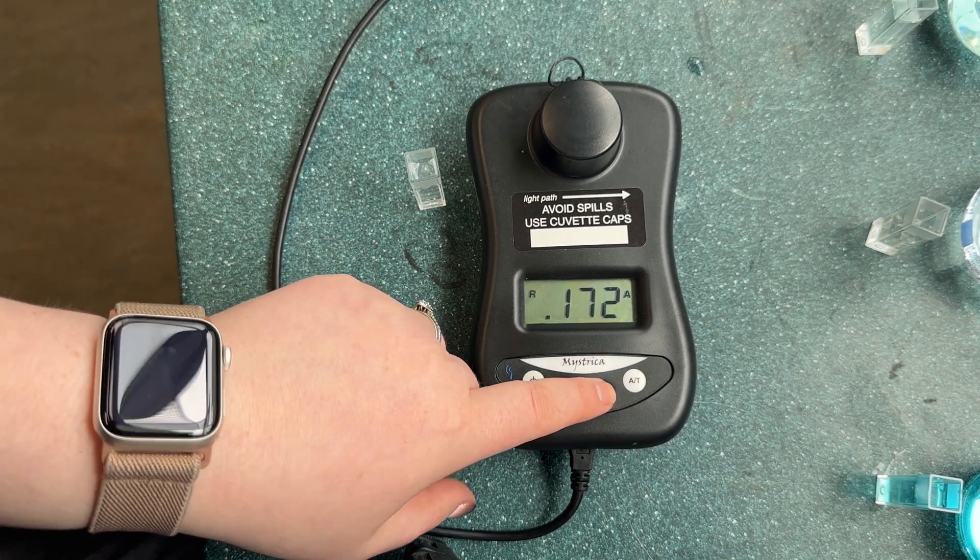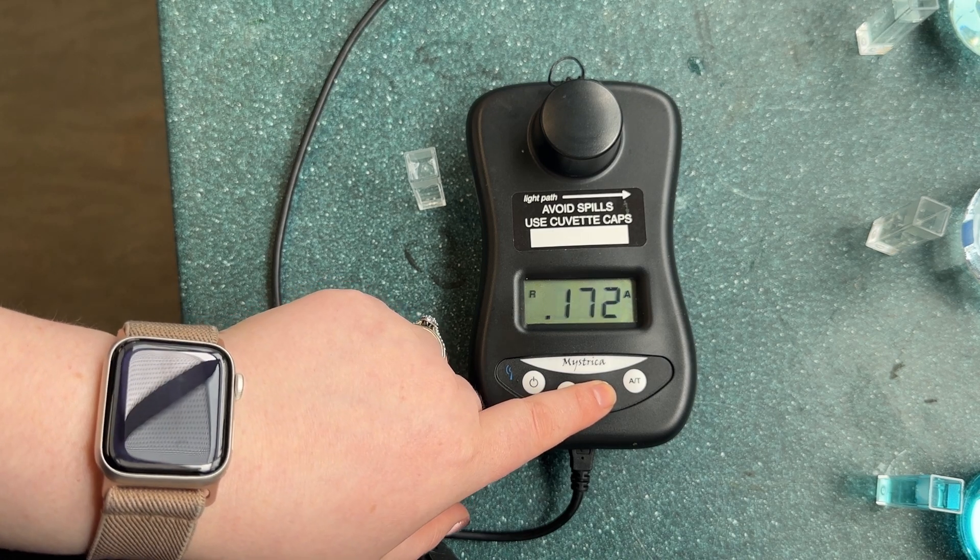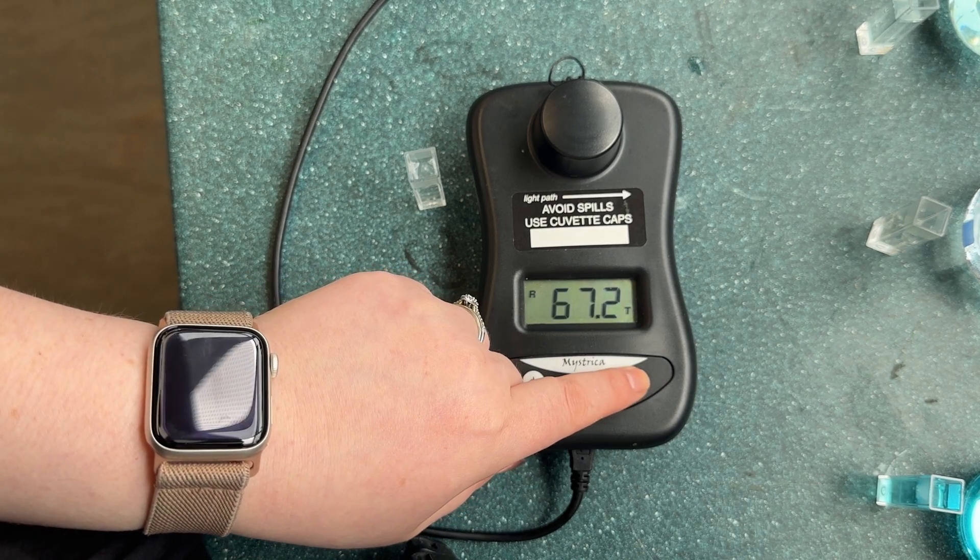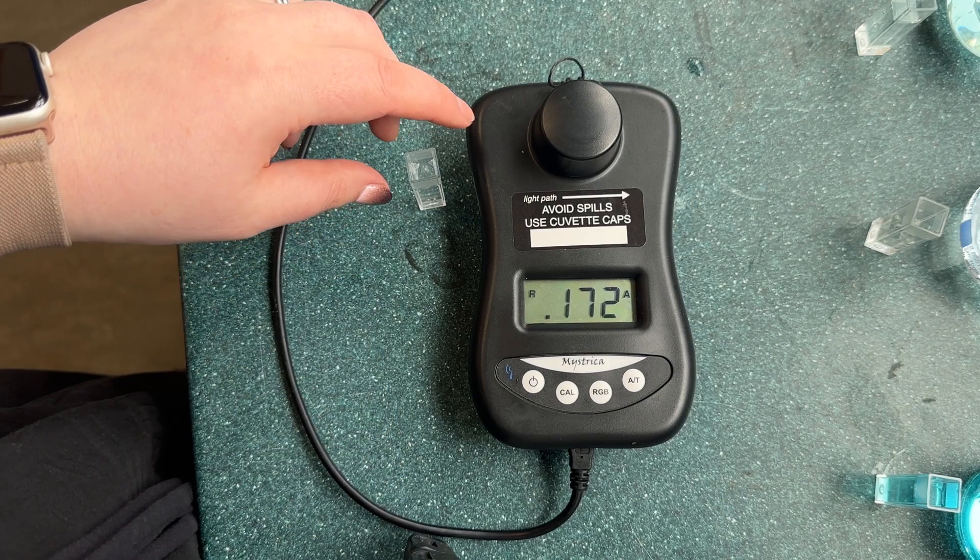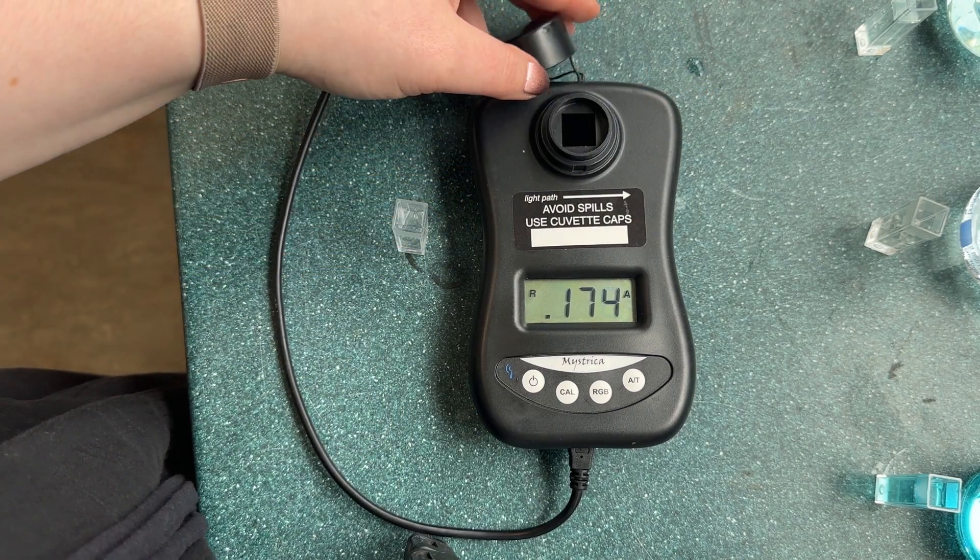We need to choose the color which is closest to the opposite on the color wheel. In this case we're going to use red. We have the option to measure either absorbance or transmittance. We're going to measure absorbance.